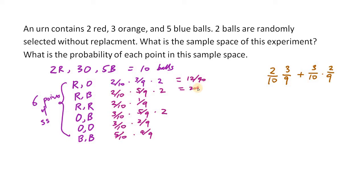So the answer would be 12 over 90, 20 over 90, 2 over 90, 30 over 90, 6 over 90, and 20 over 90.